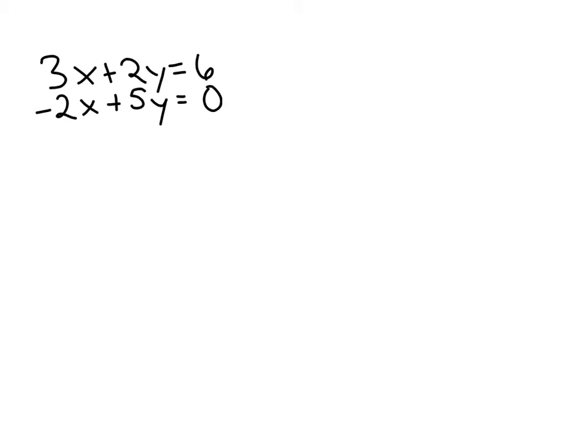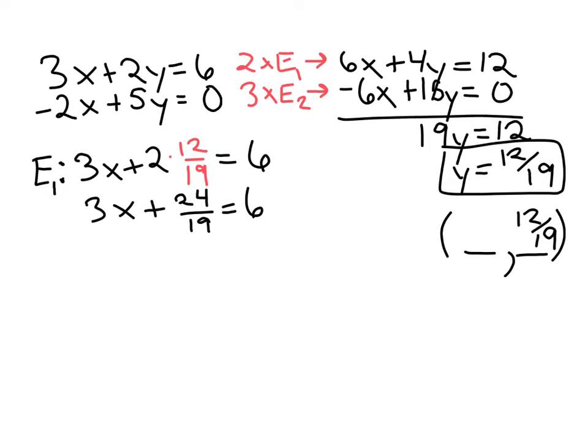I'll go to equation 1. So 3 times x plus 2 times y, which we know is 12 over 19, should equal 6. So 3x plus 2 times 12 over 19 — that's 24 over 19 — equals 6. The goal is to isolate x, so I would subtract 24 over 19 from both sides.